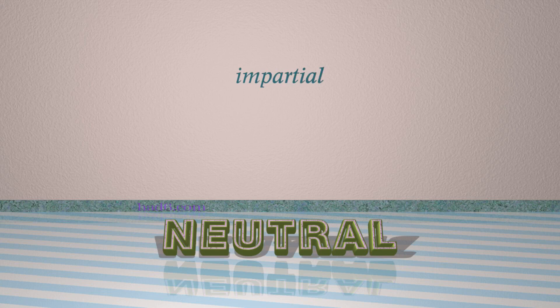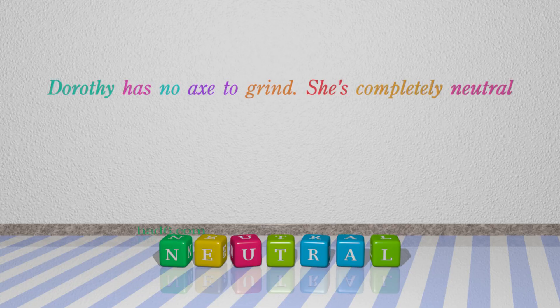Number 5: Neutral — which means impartial. For example: Dorothy has no axe to grind. She's completely neutral.